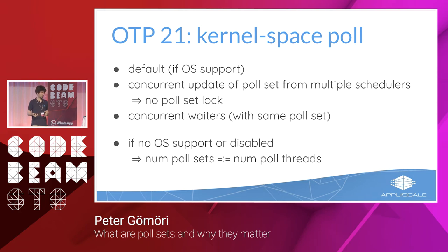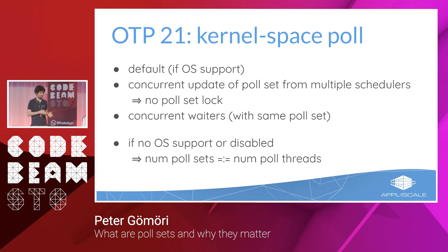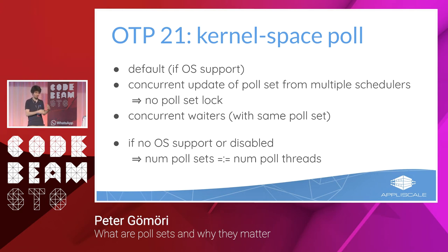When there's no OS support for kernel-space polling, polling is still done by separate polling threads — but then there's no concurrent-waiters feature, so there must be as many poll sets as poll threads. However, there is still no poll set lock; updates are enqueued in an update queue which the polling threads process — still a less lock-contended solution.